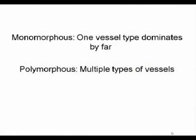There is also another important message. The vascular pattern may be monomorphous or polymorphous. In a monomorphous vascular pattern, one vessel type dominates by far, whereas in a polymorphous vascular pattern, we have multiple types of vessels.